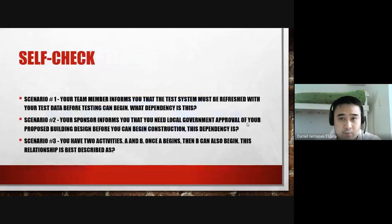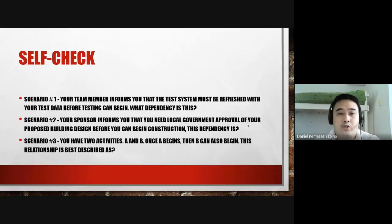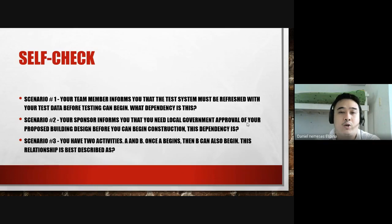Self-check: Scenario one — your team member informs you that the test system must be refreshed with test data before testing can begin. What type of dependency is this: external, discretionary, or mandatory? Mandatory means out of physical necessity. Discretionary is suggestion only, not physical necessity. External is imposed from outside the project team.